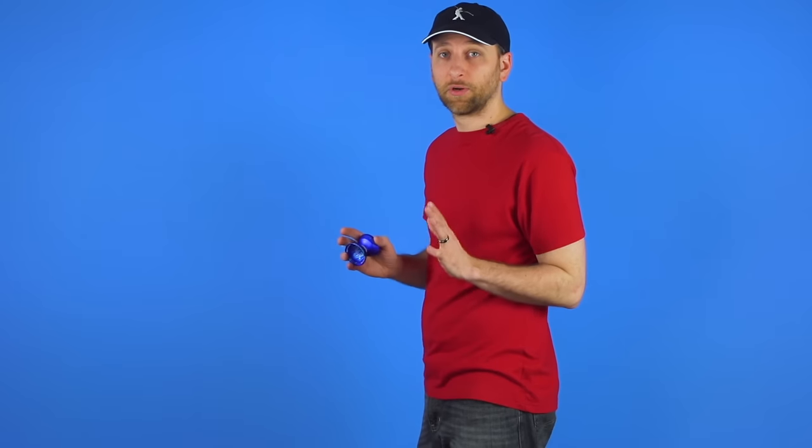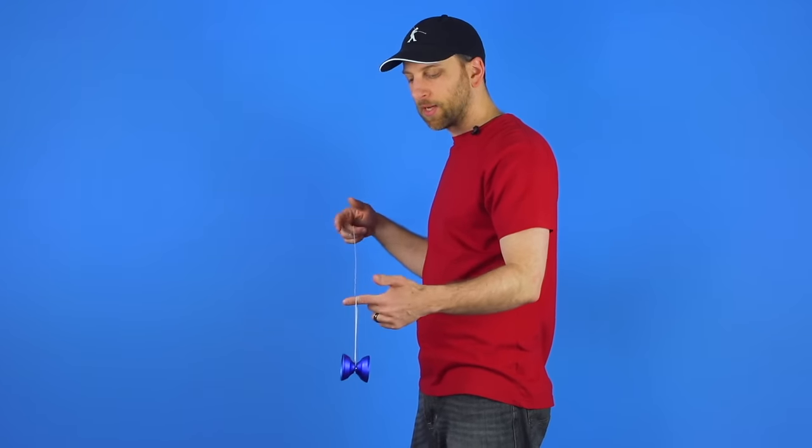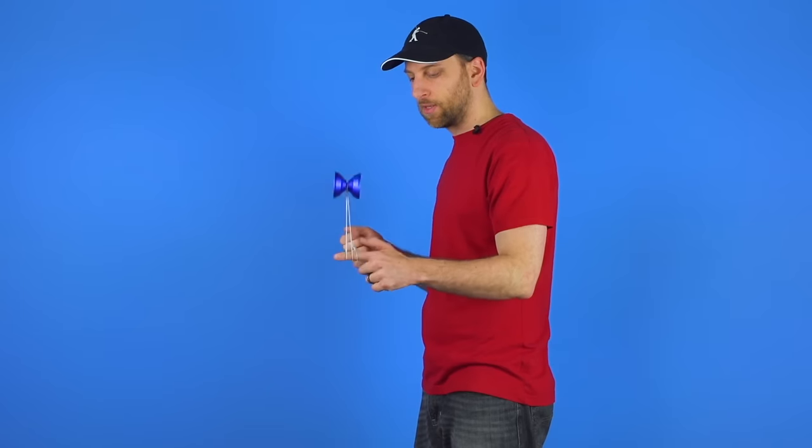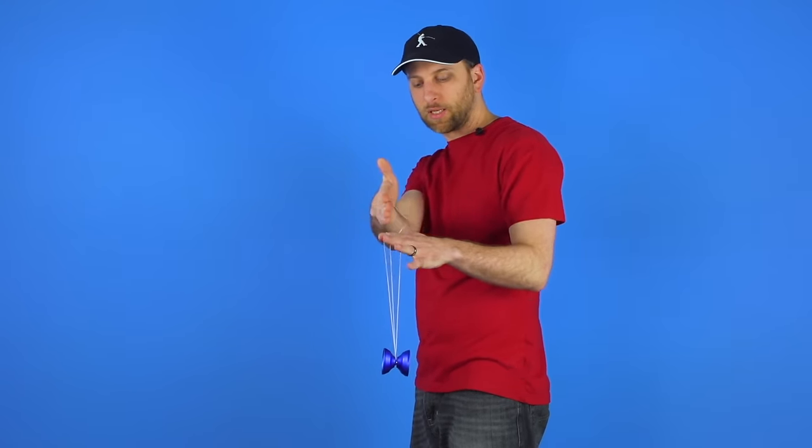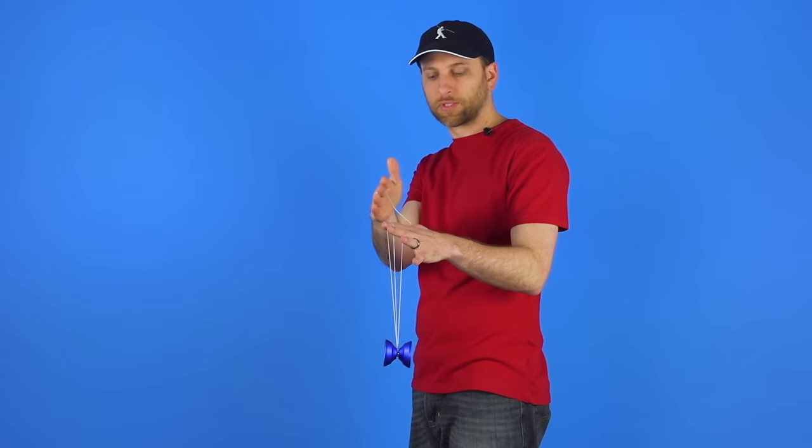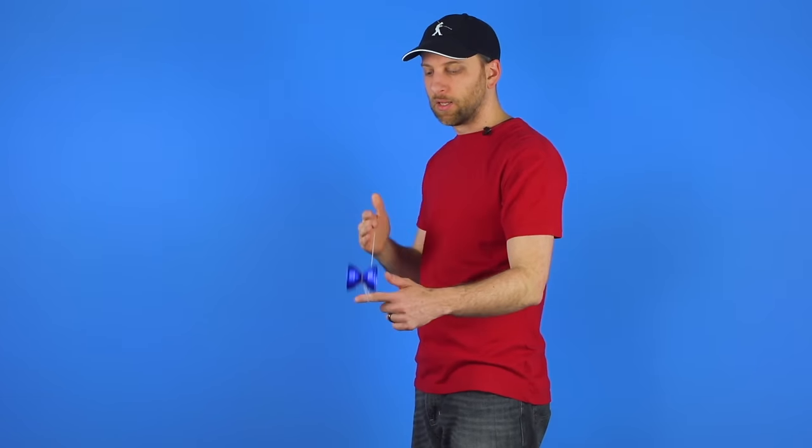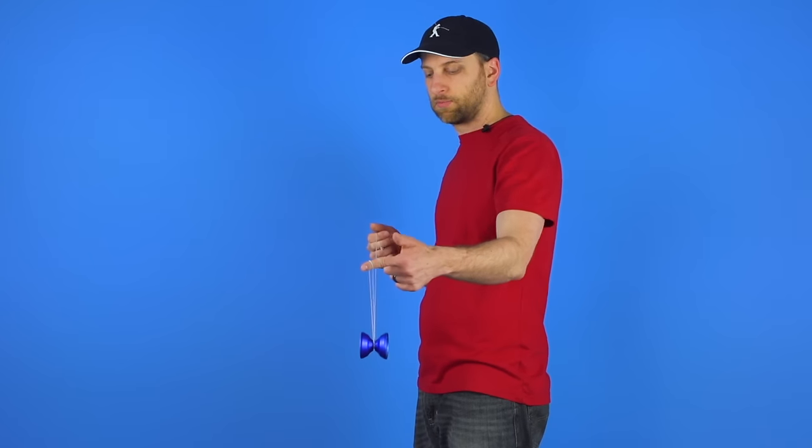If you think about it, Skin the Gerbil is a really great first trick to learn for Horizontal Style Play because it combines a whole bunch of different elements together. But if you notice, everything always stays perfectly in line with the groove of the yo-yo, so the string is never pushing into the side of the yo-yo at all. Once the yo-yo gets onto the string, throughout the whole trick it never leaves that initial mount.